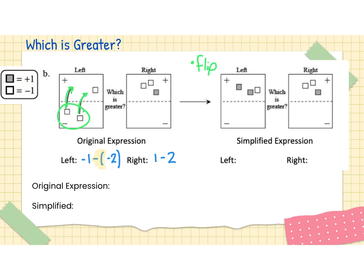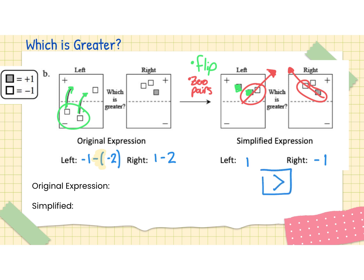We are going to flip these up. We make ourselves a key using different colors — you're using your iPad so you're able to do all of those things — and then we redraw. The first thing we want to take care of is our zero pairs, which gives us another one here as well. What do we have left? On the left-hand side, a plus one; on the right-hand side, a minus one. So what is greater? The left-hand side is greater.